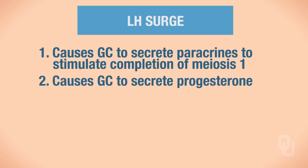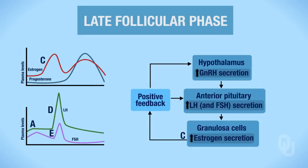Second, this surge also causes the granulosa cells to secrete progesterone. To match up with the diagram, this is illustrated using the number II on the graph. In the previous video, I mentioned a slight increase in progesterone—that is due to the LH surge causing the granulosa cells to synthesize and secrete progesterone.